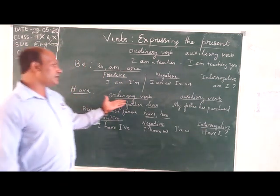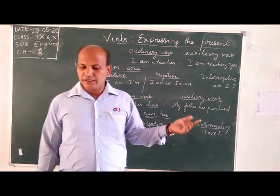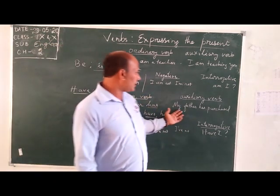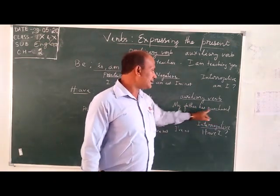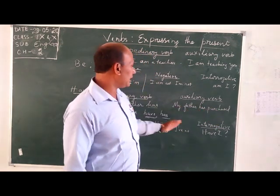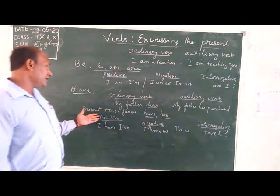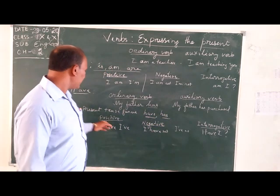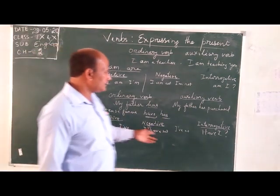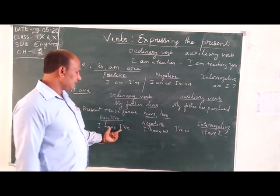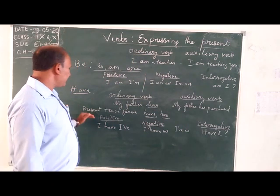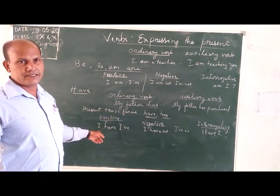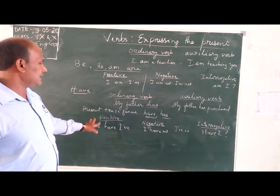Now let's come to the HAVE verb. There are ordinary and auxiliary uses — just like 'my father has two cars.' Here 'has' is an ordinary verb. But in 'my father has purchased,' 'has purchased' is the auxiliary verb mixed with the main verb. It also comes in forms: positive, negative, and interrogative. You can use different subjects like I, he, she, we, they to make different types of sentences.